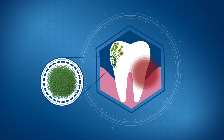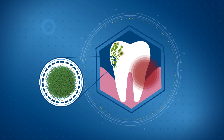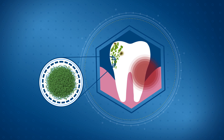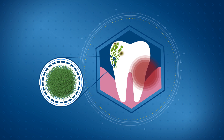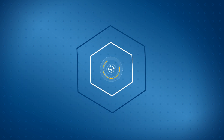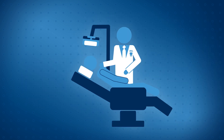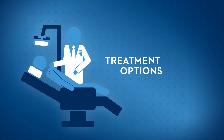If the teeth are not cared for properly, the bacteria will create acids. These acids are strong enough to weaken teeth and form tiny holes, which are the first stage of dental caries.